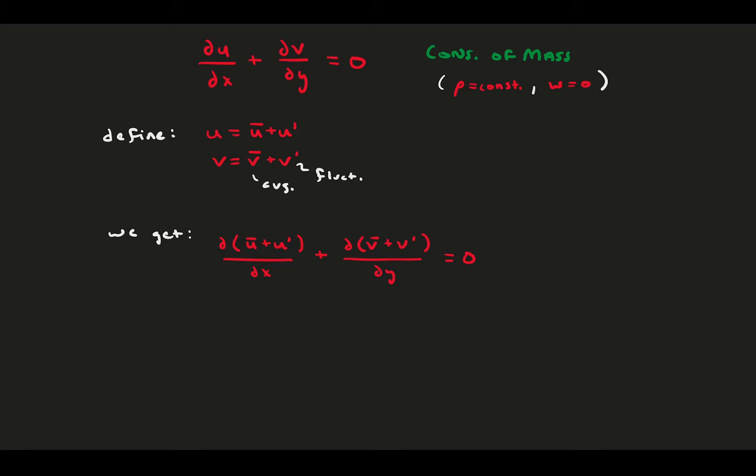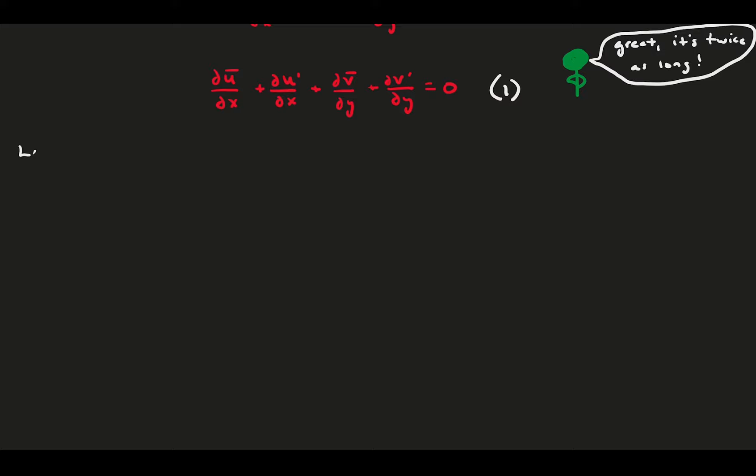Now we define that each velocity variable separates into the mean and fluctuating component, so u equals u-bar plus u-prime, and v equals v-bar plus v-prime. Plug these back into the original equation and distribute the derivatives into the parentheses. We end up with an equation that has four terms instead of two terms. And you might be thinking, great analysis, the equation just got twice as long. But to this equation, we're going to apply a series of math tricks to get the equation to tell us two useful and separate things.